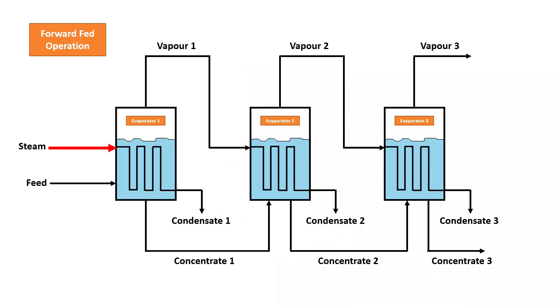Hot steam is passed through metal tubes within the evaporator and leaves as condensate. The cold feed solution is pumped into the first evaporator and makes contact with the hot metal tubes, which heats the solution and causes some of it to vaporize.